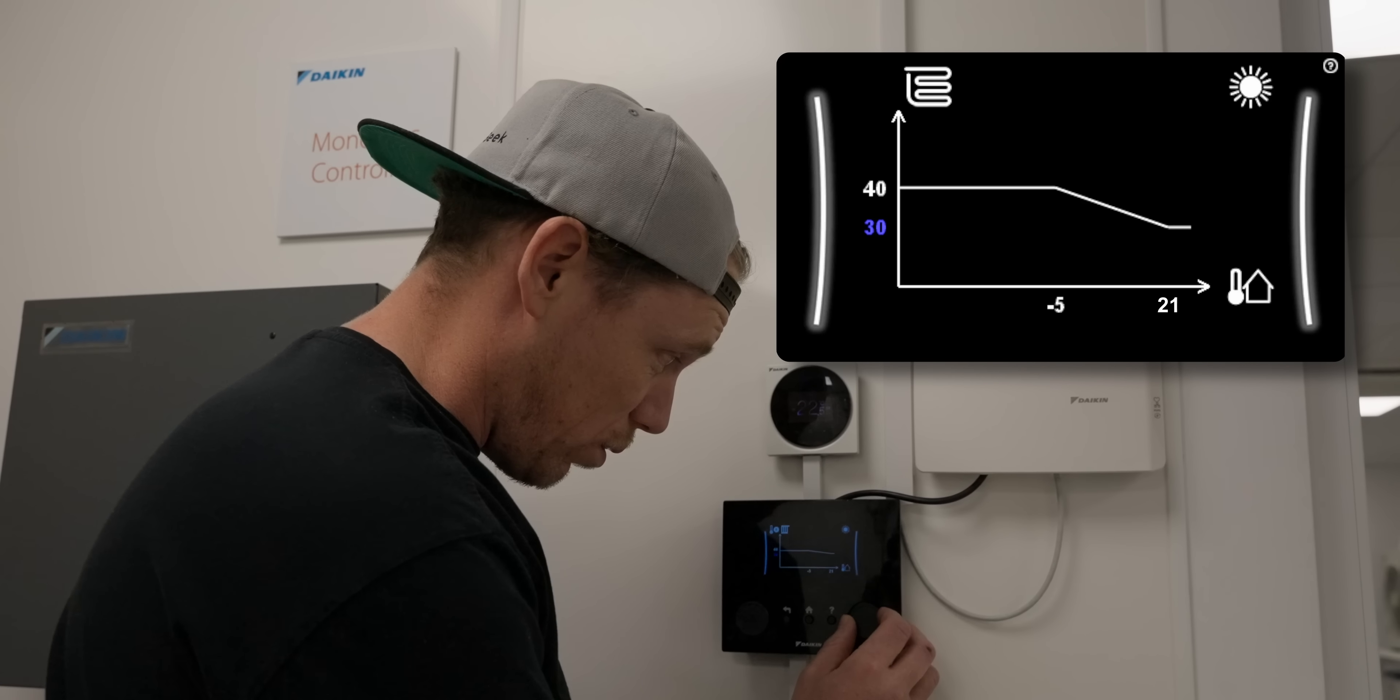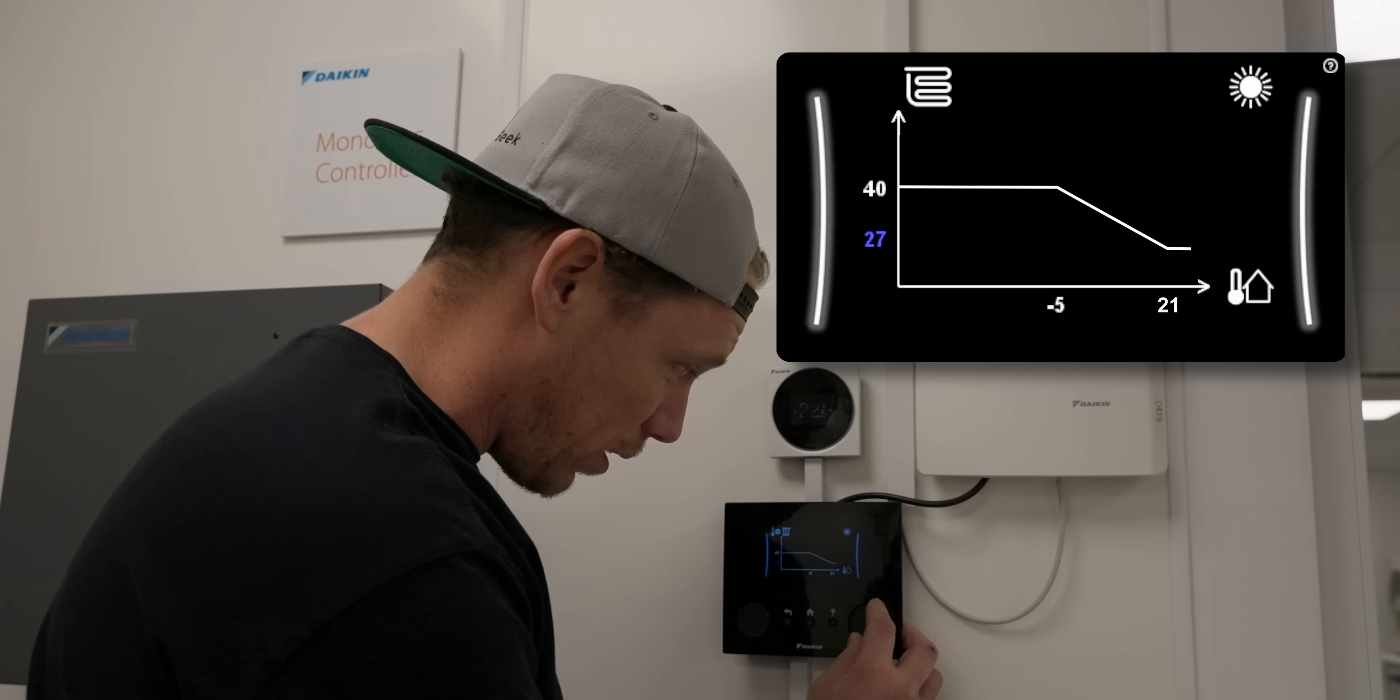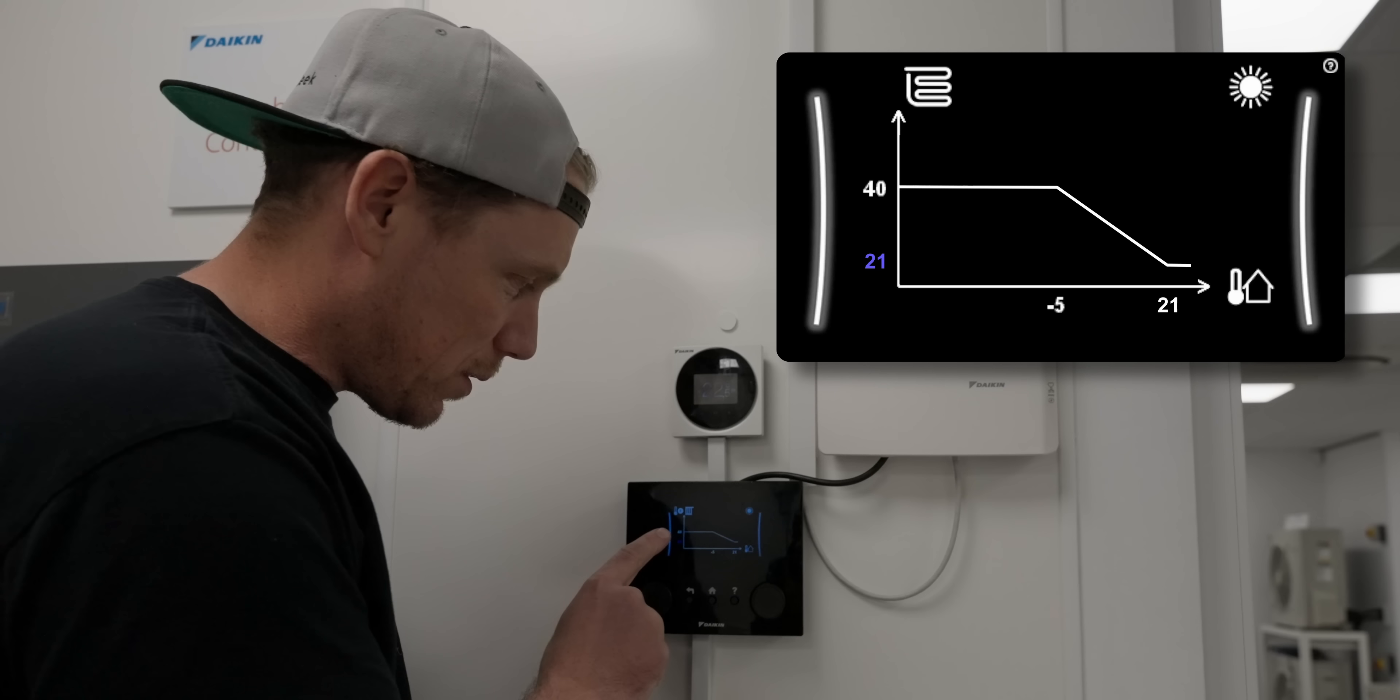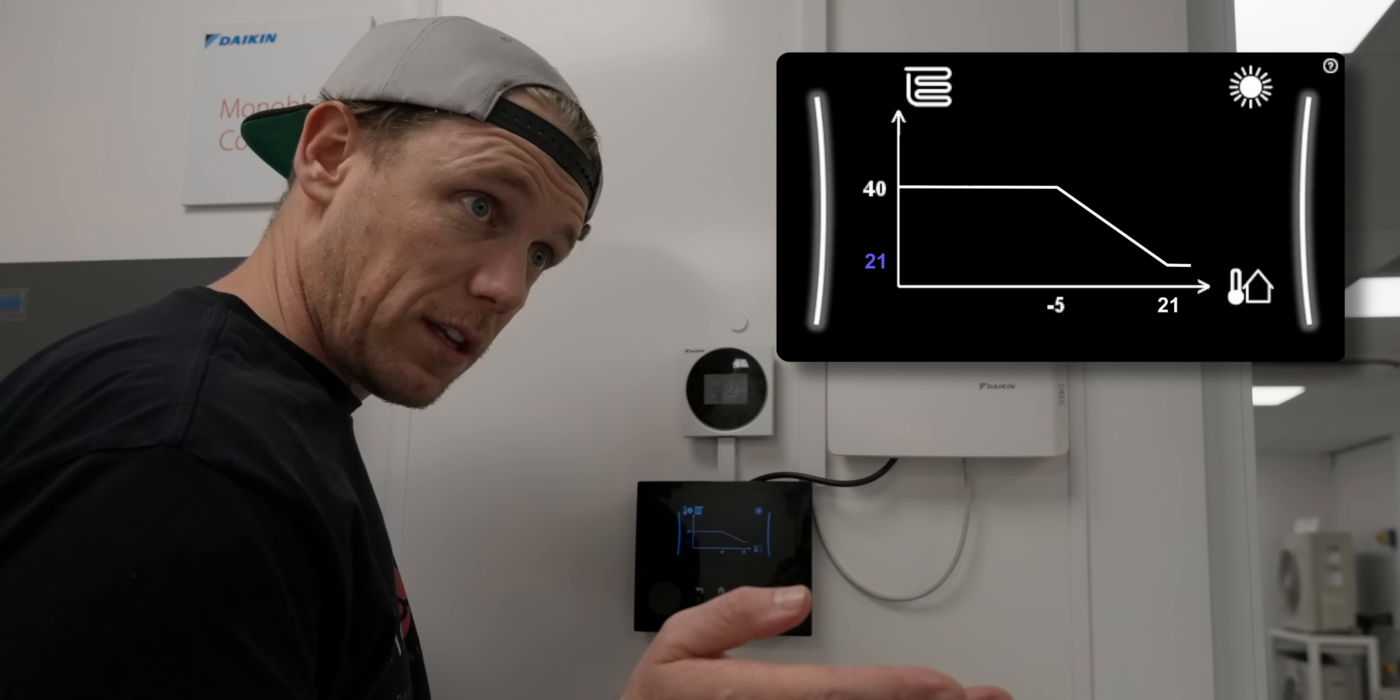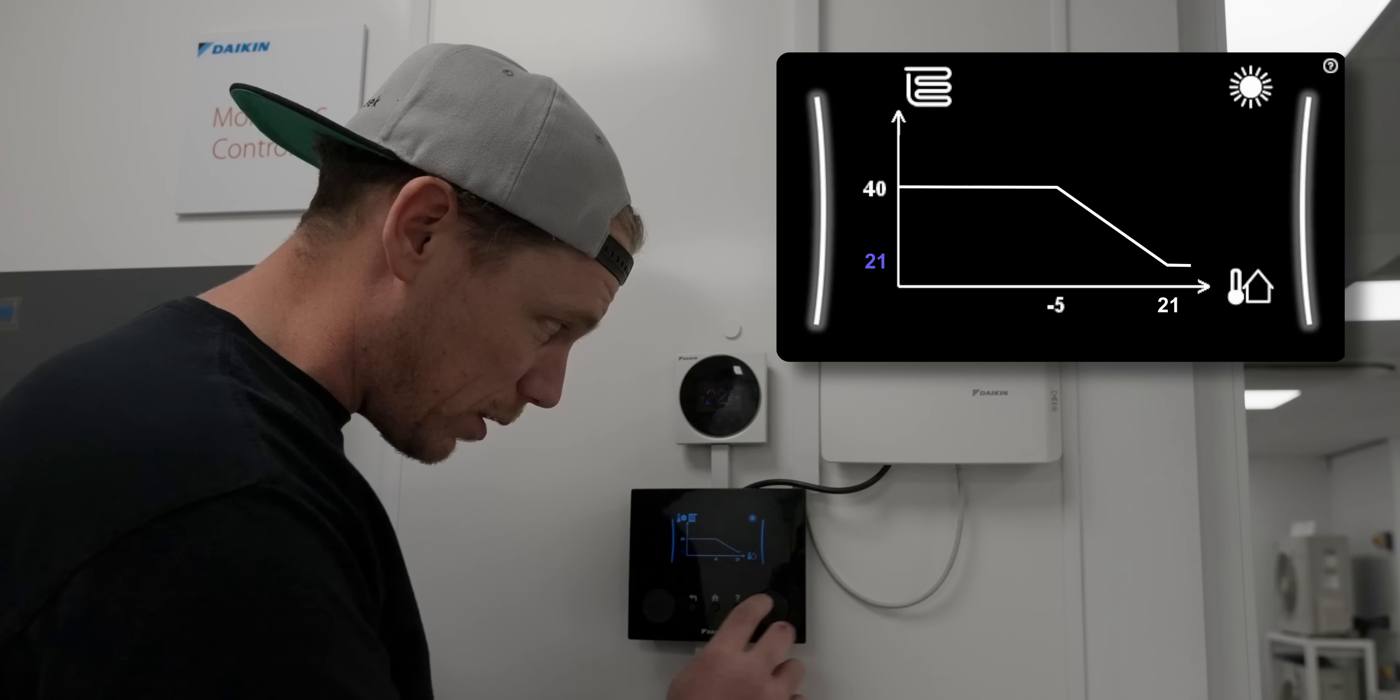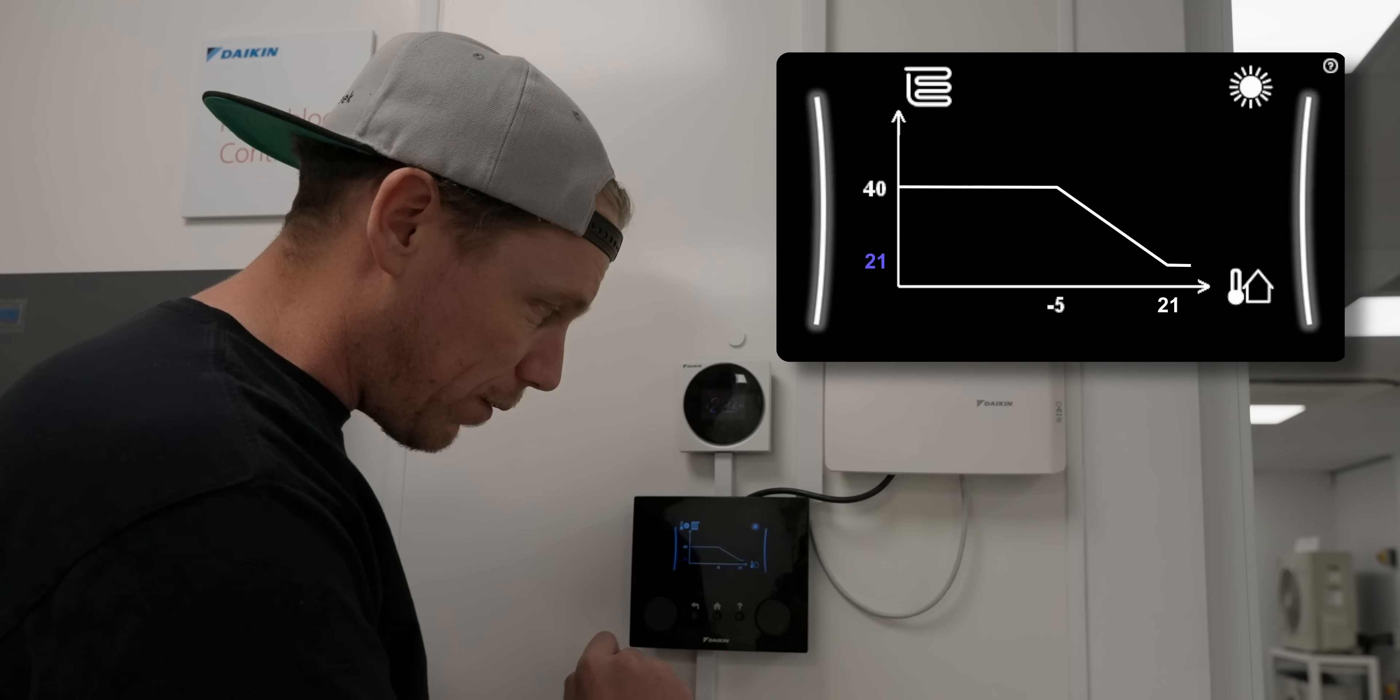And then the minimum temperature I would advise to set to your main room temperature. If you like it 21, I would advise 21. However, the Daikin heat pumps cut out at 25 degree flow temperature anyway to protect the compressor, so it's actually going to stop at 25 degree flow temperature anyway.